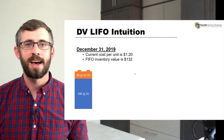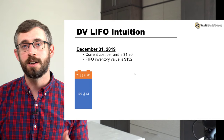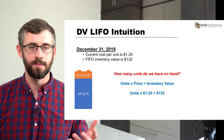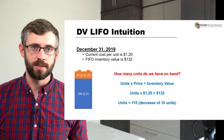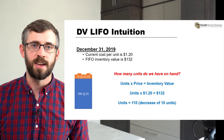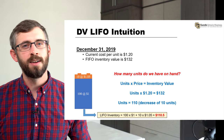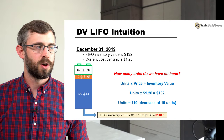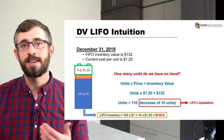Fast forward one more year: our current cost per unit has gone up to $1.20, and at these current costs our FIFO inventory value is $132. Taking unit price times number of units equal to $132, we back into 110 units on hand. Our inventory went down by 10 units, so under the LIFO method we lose 10 units out of that $1.05 block built in the prior year. Our current LIFO inventory value is 100 units at $1 per unit and 10 units at $1.05 per unit, for a LIFO inventory value of $110.50.